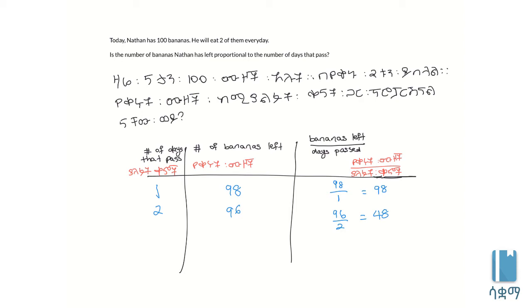For this to be proportional, we need to check if there's a constant of proportionality. If proportional, we should see a constant ratio. But if we test this with different values - one day, two days, three days - the relationship doesn't hold with a constant multiplier.